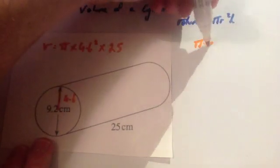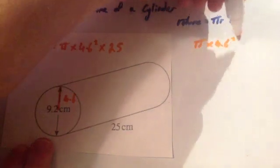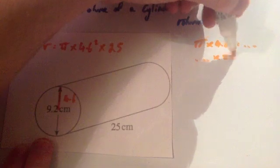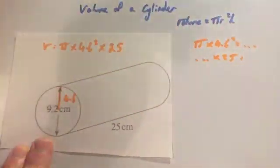I do pi r squared first of all, pi times 4.6 squared. I get that answer, and then I do that answer times 25. And then that gives me my answer for the volume of the shape.